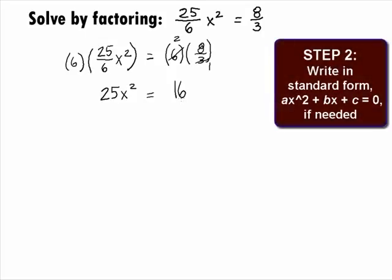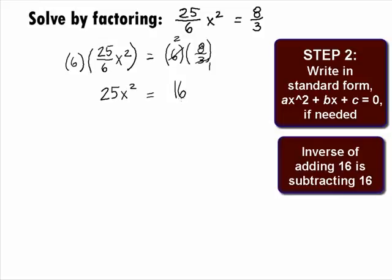In Step 2, we want to write this quadratic in standard form if needed. Standard form for a quadratic equation is A x squared plus B x plus C equals 0. It looks like we need to move that 16 over to the left side. We can do that by subtracting 16 from both sides. So we will have 25 x squared minus 16 equals 16 minus 16. This will simplify to be 25 x squared minus 16 equals 0.